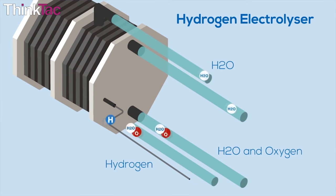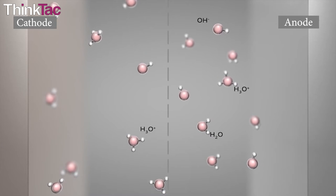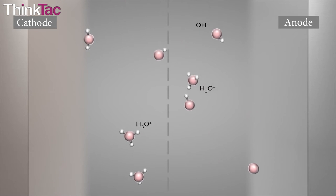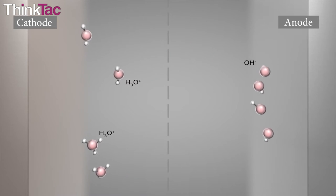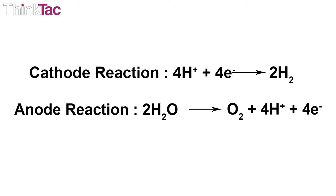Water reacts at the anode to form oxygen and positively charged hydrogen ions. The electrons flow through an electric circuit and the hydrogen ions move across the membrane called a polymer electrolyte membrane towards the cathode. Here the hydrogen ions combine with the electrons from the external circuit to form hydrogen gas. The reaction taking place inside the units are, as seen here, the cathode reaction and the anode reaction.